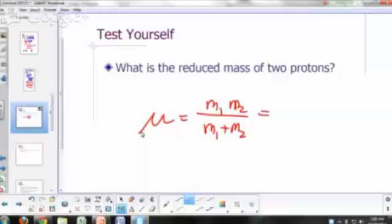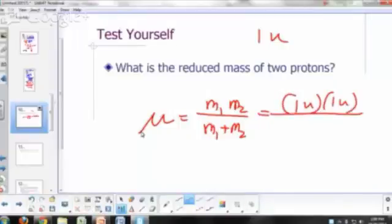So what's the mass of a proton? One atomic mass unit. So 1u times 1u divided by 1u plus 1u. And you can change that to kilograms if you want to.